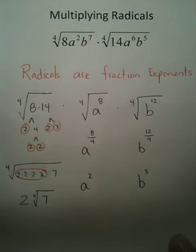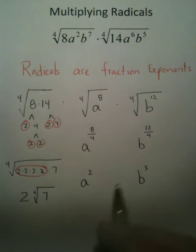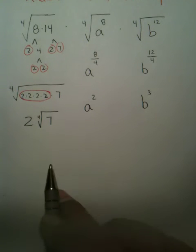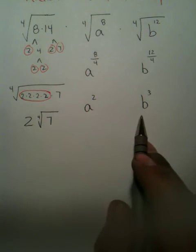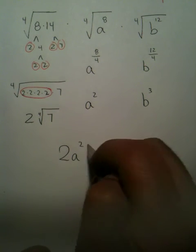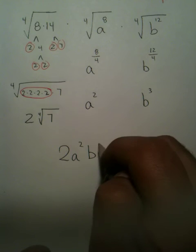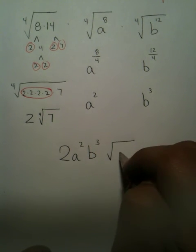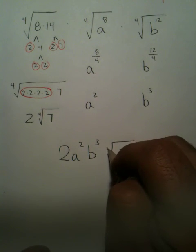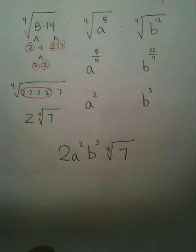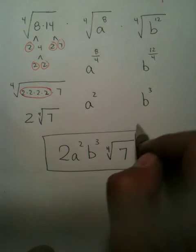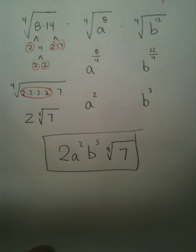Now you just combine all the pieces together. Your final answer is: you take this piece, this piece, and this piece — 2, A squared, B to the third, radical 7 with an index of 4. Easy, done.